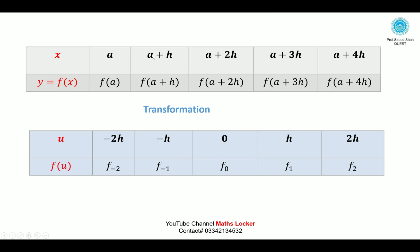Continuing the transformation: a+h minus a+2h gives −h, and a minus a+2h gives −2h. We call this transformation u, so instead of f(x) we write f(u), and instead of f(a) we write f(a) for the transformation.